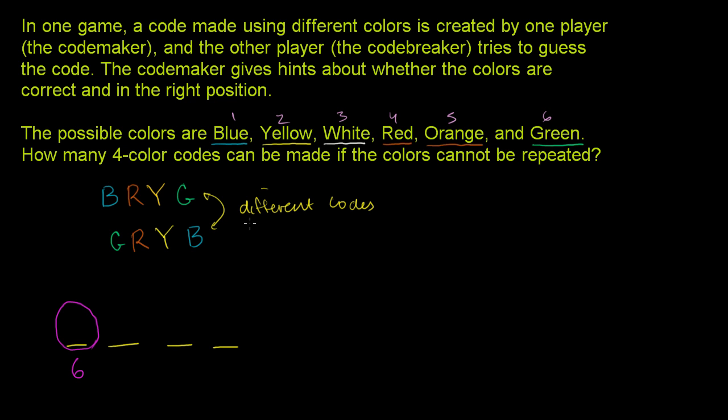Now, they told us that the colors cannot be repeated. So whatever color is in this slot, we're going to take it out of the possible colors. So now that we've taken that color out, how many possibilities are when we go to this slot, when we go to the next slot? Well, we took one of the six out for the first slot, so there's only five possibilities here.